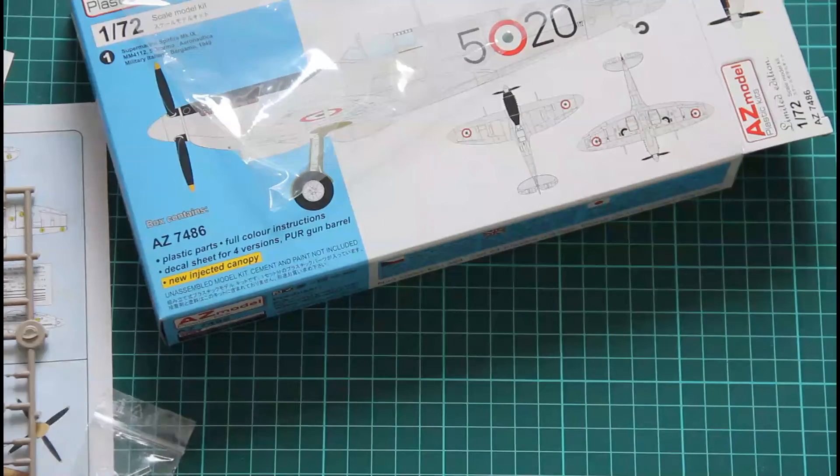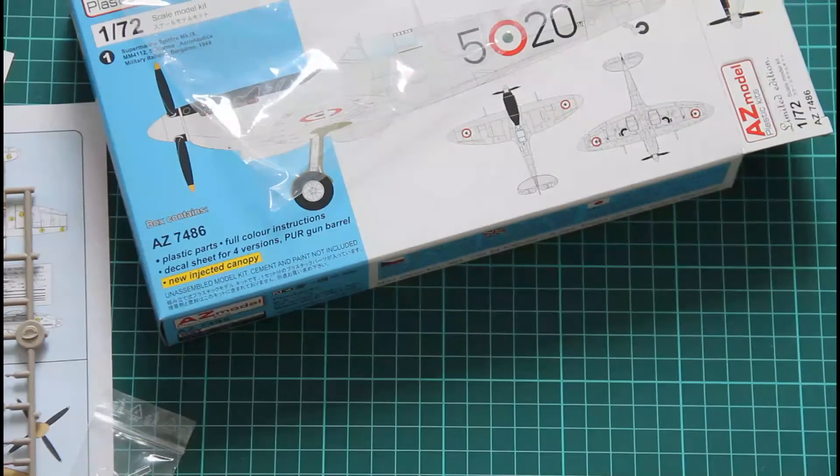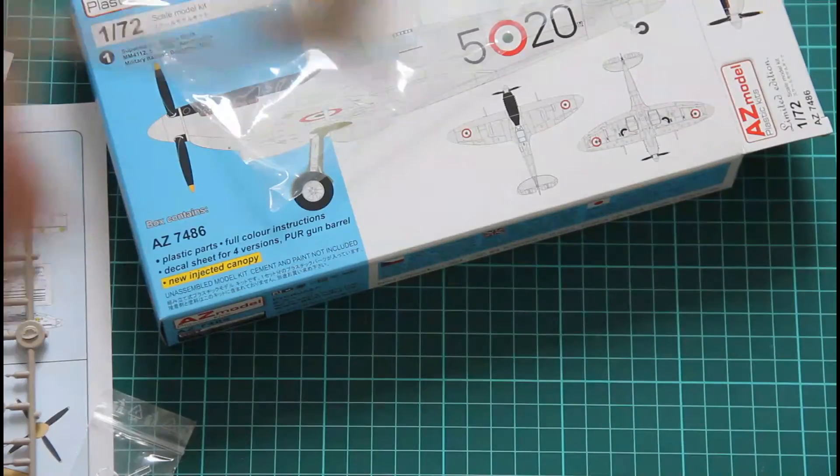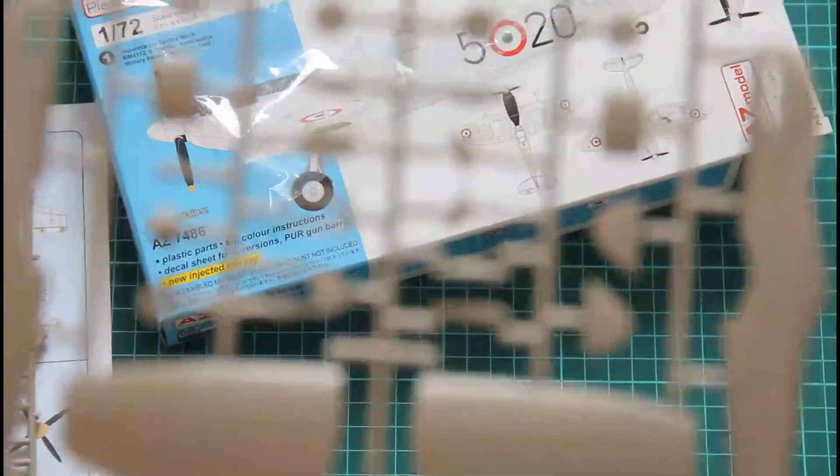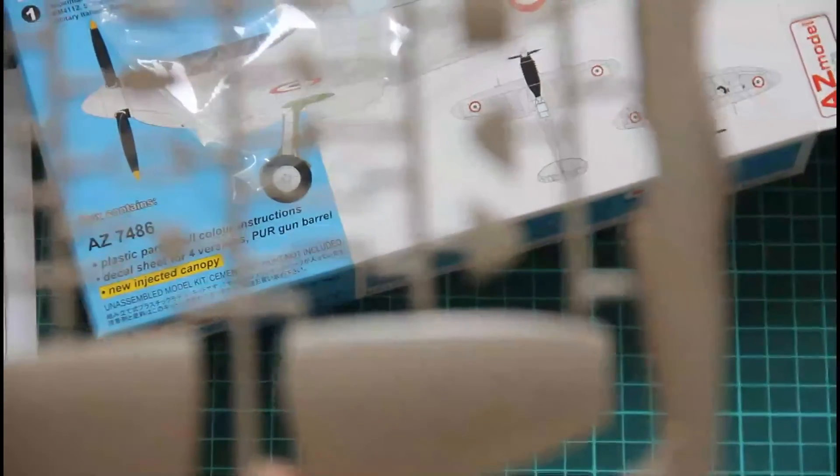So let's begin from the plastic sprues. Here we have the one which contains fuselage halves.